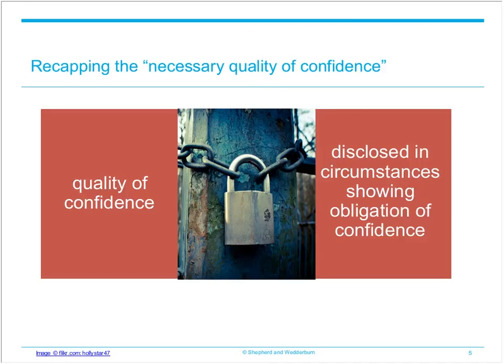In the last webinar we discussed the phrase 'necessary quality of confidence.' In order to achieve this, two conditions must be met. First, the information cannot be public knowledge — that is, it must not exist in the public domain. Second, the information must be given in circumstances which show there is an obligation of confidence. We previously looked at CF Partners and Barclays in relation to this point. Essentially the courts apply the reasonable man test: would the reasonable man, standing in the shoes of the recipient, have realised the information was given in confidence? Where information passes these tests, it is confidential on the face of it. The next issue is: how do we keep it confidential?